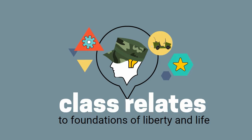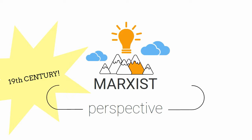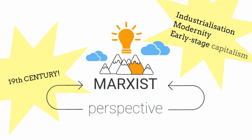In talking about class, one can talk about the Marxist perspective, which emerged from the writings of Karl Marx in the 19th century with the rise of industrialisation, modernity and early-stage capitalism. As Brown continues, the early Marxist categories of social class defined the social group's relationships to the ownership of the means of production.